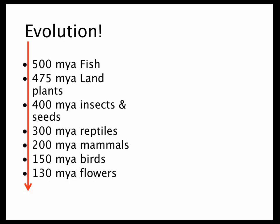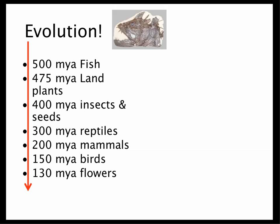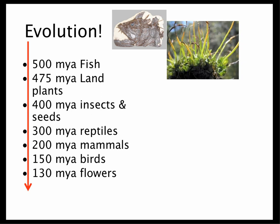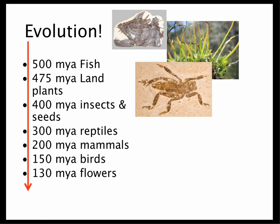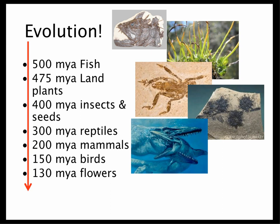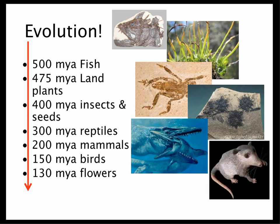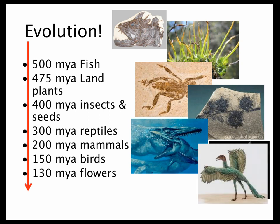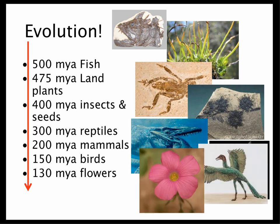Evolution carried on after the Cambrian Explosion. 500 million years ago, the ancestors of modern fish appeared. 475 million years ago, the first land plants. 400 million years ago, insects and seeds appeared on Earth for the first time. Around 300 million years ago, reptiles. 200 million years ago, mammals. 150 million years ago, birds. And 130 million years ago, flowers. So life evolved and new species appeared over time.